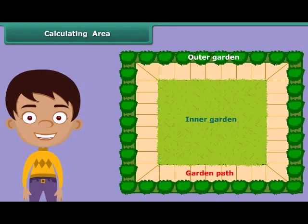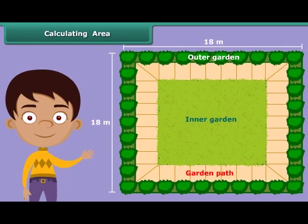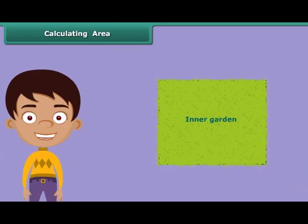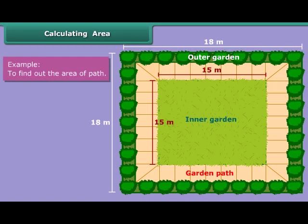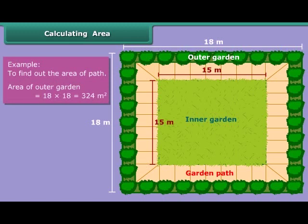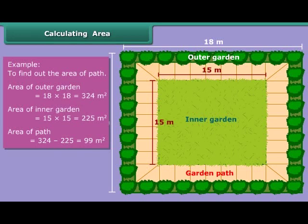Now let us advance a little further. Suppose there is a square garden of 18 meters. We want to make a provision for a path on all four sides. The inner garden, after the path is made, should be 15 meters. We want to find the area of the path. To do so, calculate and deduct the area of the inner garden from the area of the outer garden. Area of the outer garden is 324 meters square and area of the inner garden is 225 meters square. So, the area of the path will be 324 meters square minus 225 meters square, which is equal to 99 meters square.